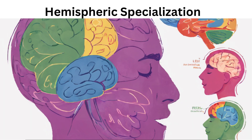The cerebral hemispheres, left and right, have distinct functions with some degree of lateralization. In most right-handed individuals, the left hemisphere is associated with language processing, while the right hemisphere is often more involved in spatial reasoning and certain aspects of creativity.